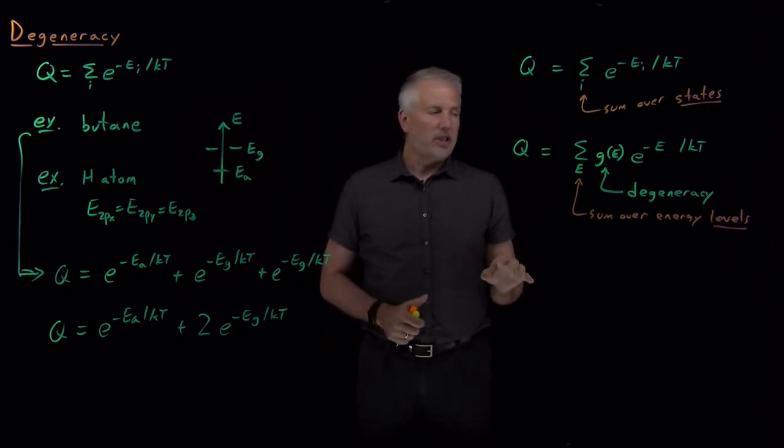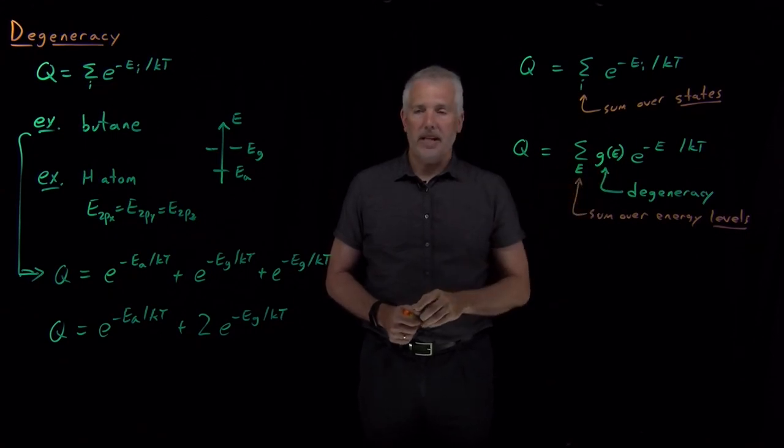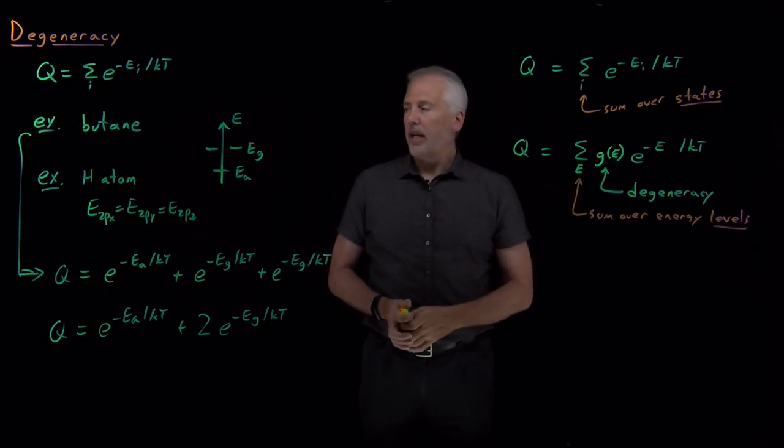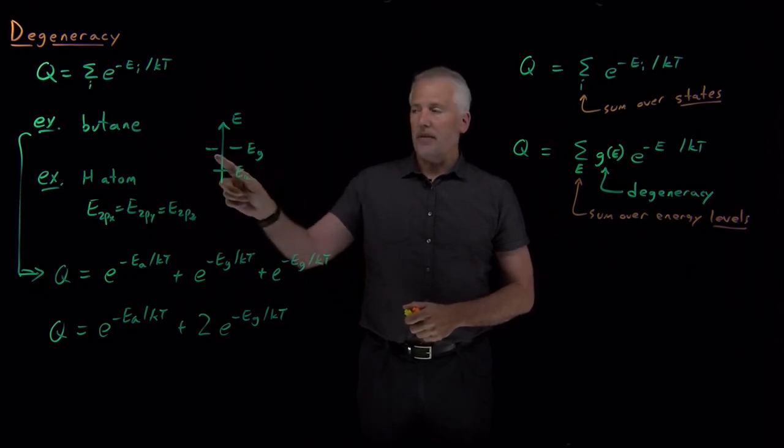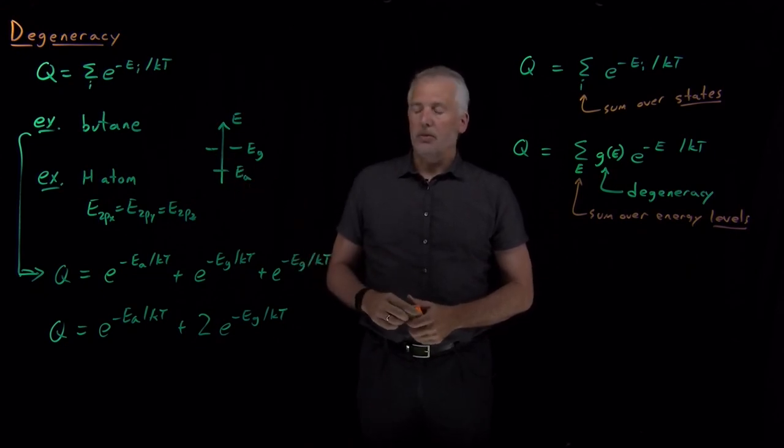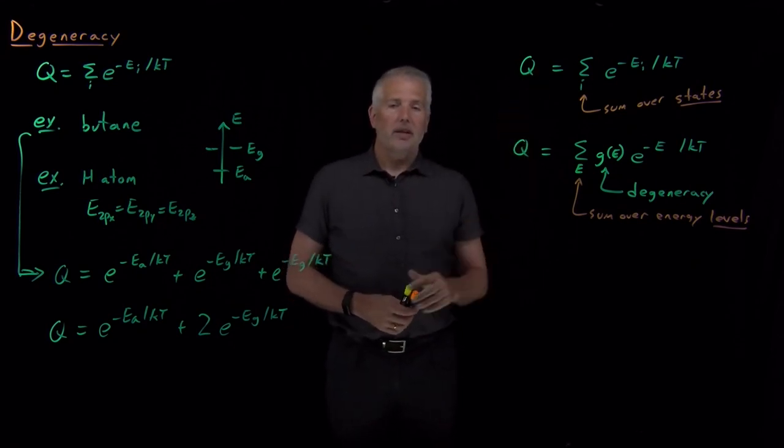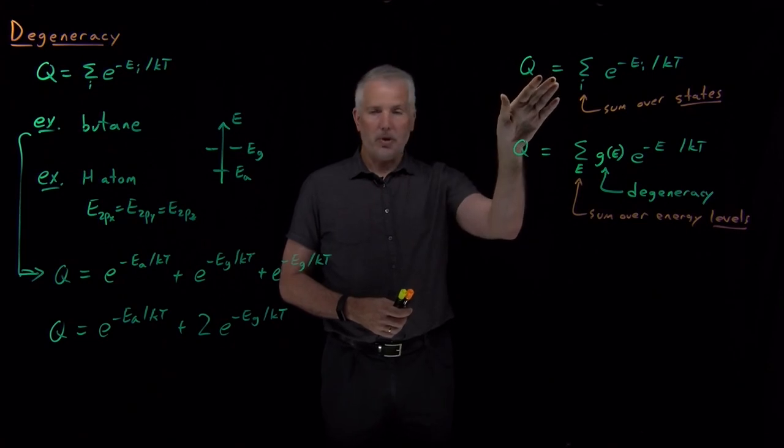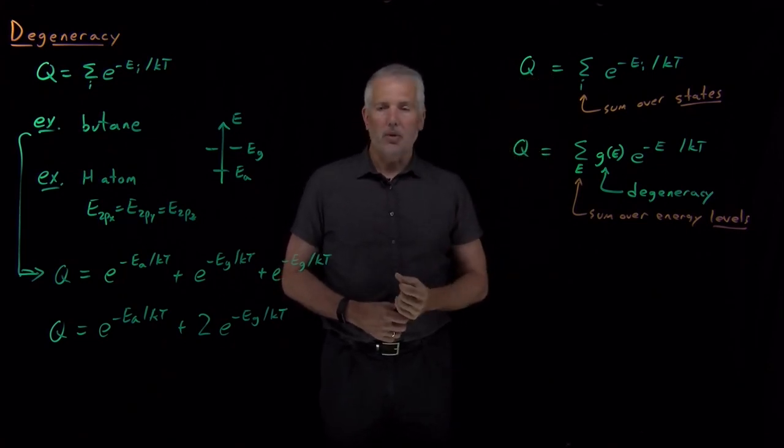So that's this idea of degeneracy. The degeneracy is the number of states that have the same energy, and I could say that a system is degenerate or has degeneracy if there are multiple states that have the same energy as each other. So it's important to introduce this idea of degeneracy so that we can use either one of these expressions for describing the partition function as we move ahead, and sometimes this one will be more convenient, sometimes this one will be more convenient, but now we have the ability to think about either one of them when we want to.